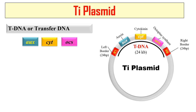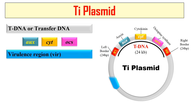The T-DNA contains three genes: first, the aux gene; second, the cyt gene — these two genes are responsible for cancerous growth in the plant; and third, the ocs gene, which is responsible for making opines, which may be either octopine or nopalines. These opines are required for the nutrition of the bacteria.